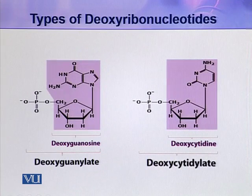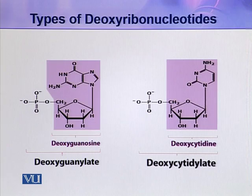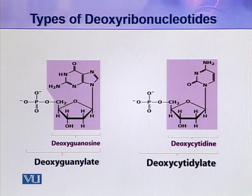These are the other two types of deoxyribonucleotides, because only four types of nitrogenous bases are present in the DNA molecule, and these are adenine, guanine, cytosine, and thymine. So there are only four types of deoxyribonucleotides.